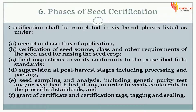Six phases of seed certification. Certification shall be completed in six broad phases: A. Receipt and scrutiny of application. B. Verification of seed source, class, and other requirements of the seed used for raising the seed crop. C. Field inspections to verify conformity to the prescribed field standards. D. Supervision at post-harvest stages including processing and packing. E. Seed sampling and analysis, including genetic purity test and/or seed health test, if any, in order to verify conformity to the prescribed standards. F. Grant of certificate and certification tags, tagging and sealing.